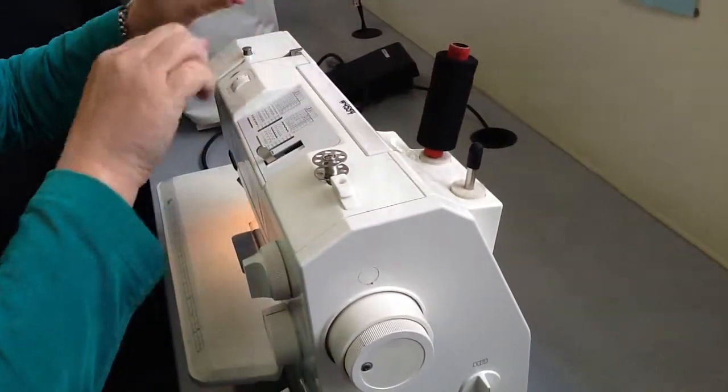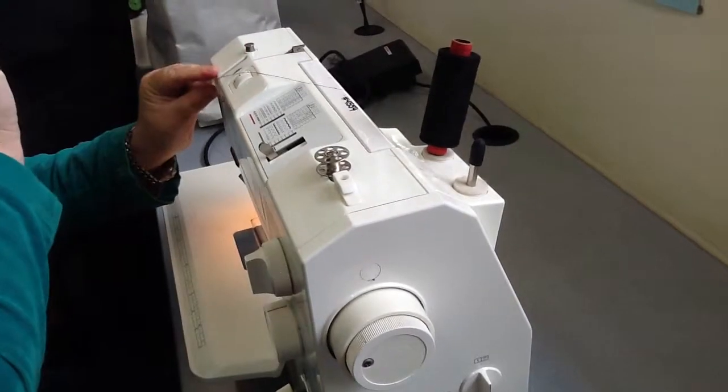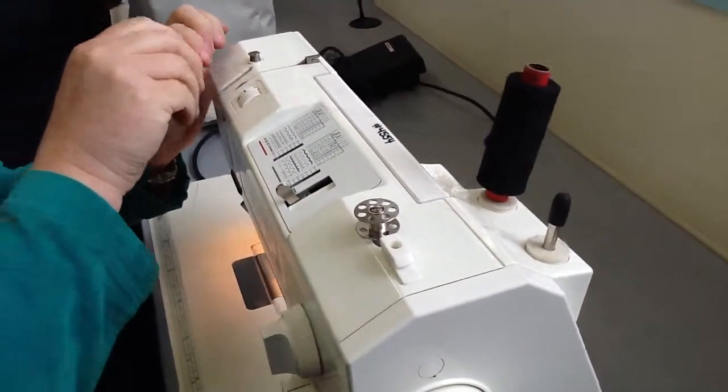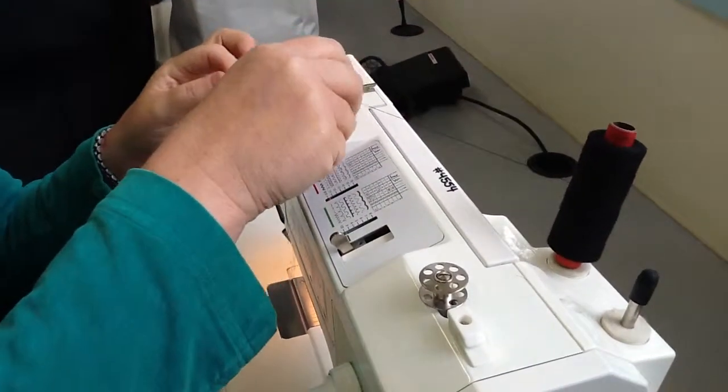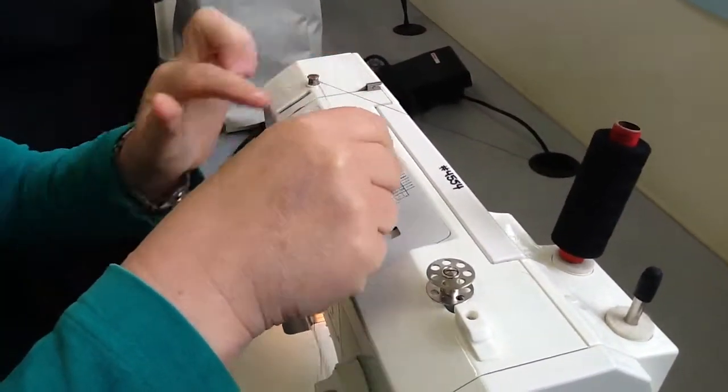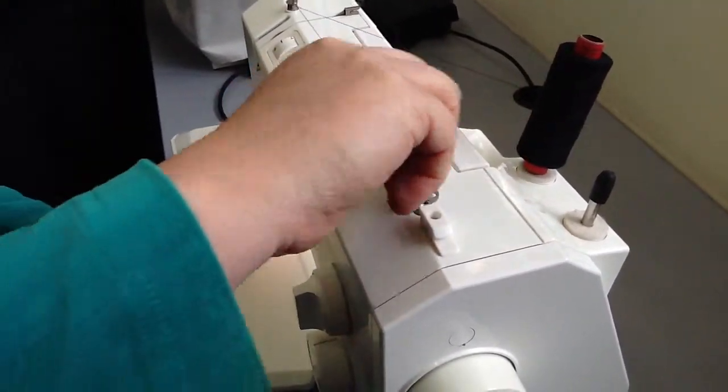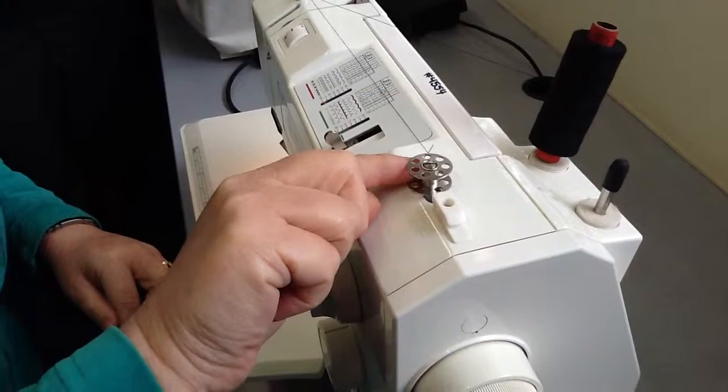You will see that on this little winder here it has a set of arrows. So you put your cotton where the arrows indicate, so it's telling me to go around this way, then I wind it on around my bobbin, and I push my bobbin to the right.